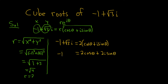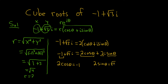Two complex numbers are equal when their real parts are equal and their imaginary parts are equal. That means 2 cosine theta equals negative 1, so cosine of theta equals negative 1 over 2. And 2 sine theta equals the square root of 3, so sine of theta equals the square root of 3 over 2.